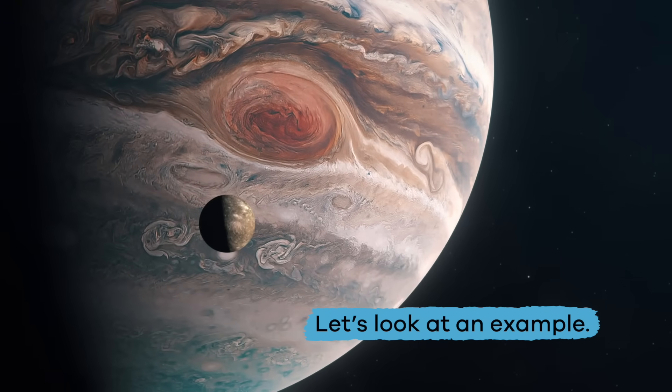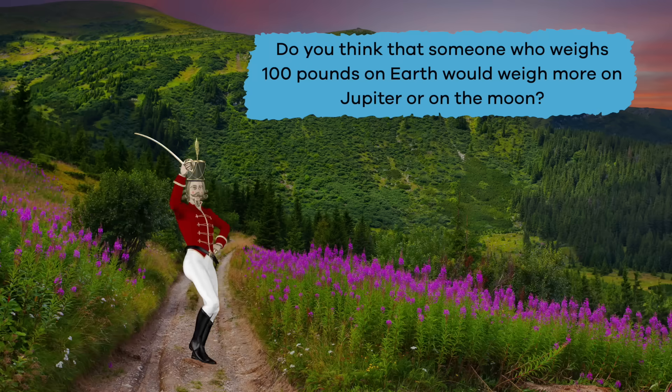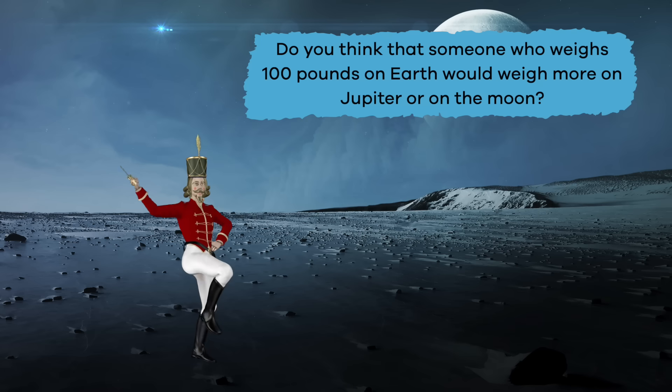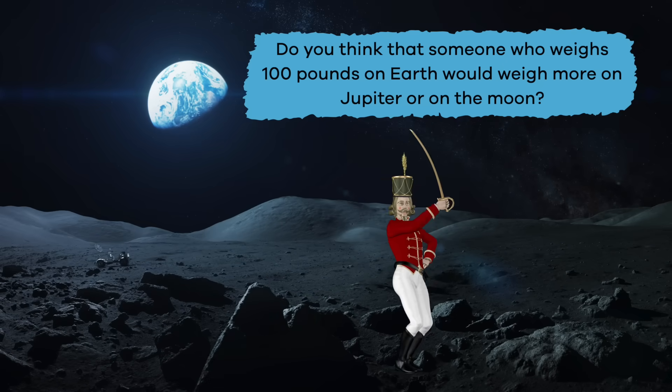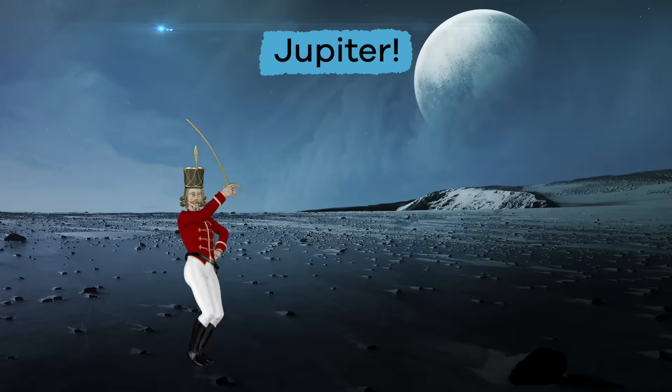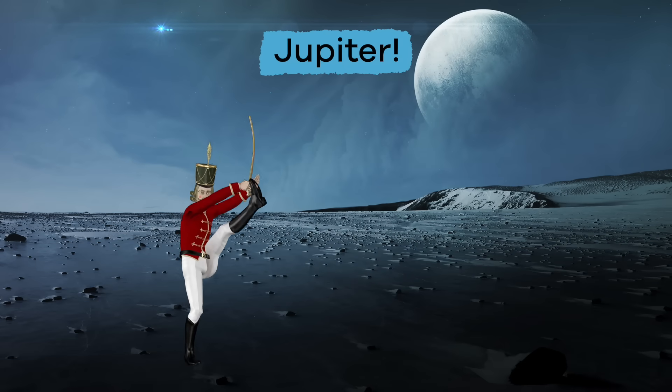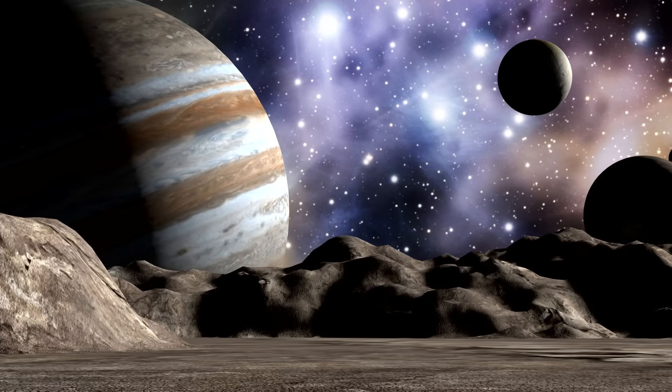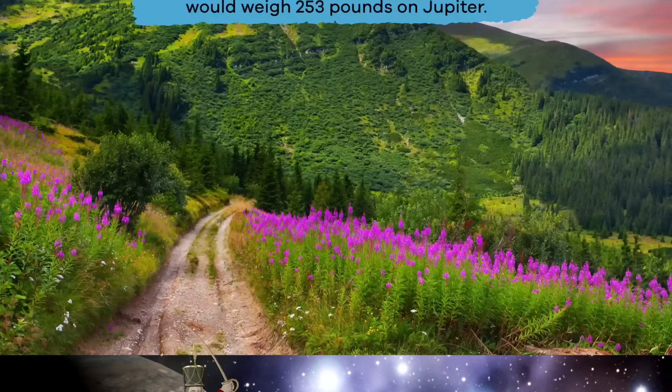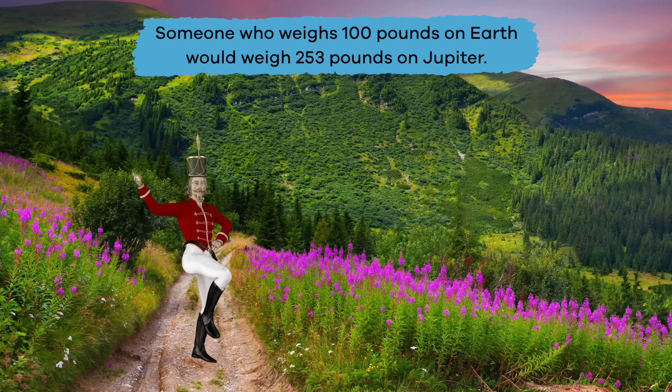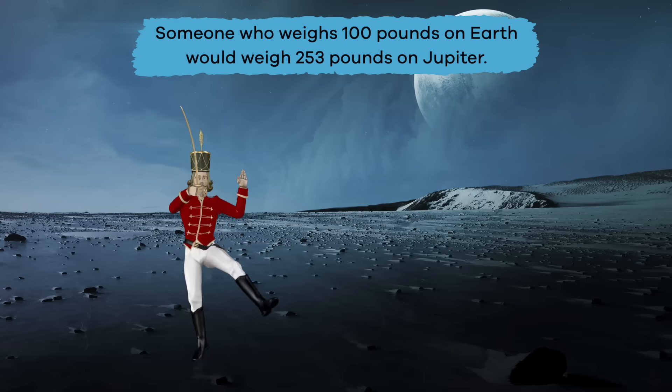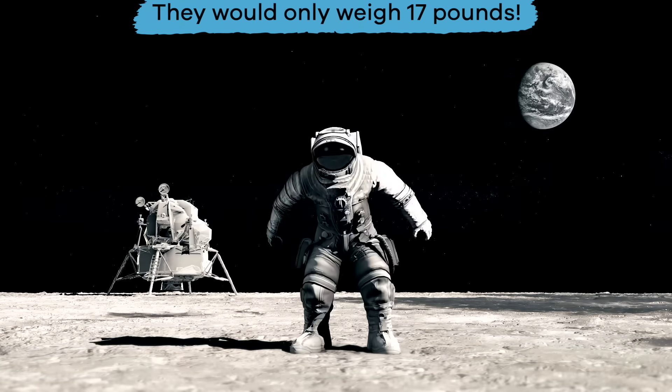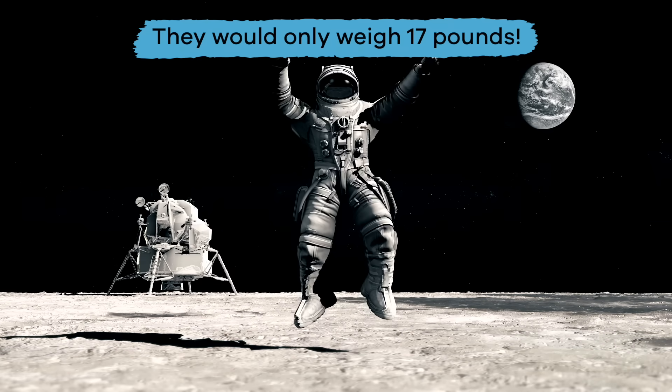Let's look at an example. Do you think that someone who weighs 100 pounds on Earth would weigh more on Jupiter or on the Moon? If you said Jupiter, you're right. Since Jupiter has more mass, its gravitational pull is greater. Which means that someone who weighs 100 pounds on Earth would weigh 253 pounds on Jupiter. On the Moon, they would only weigh 17 pounds.